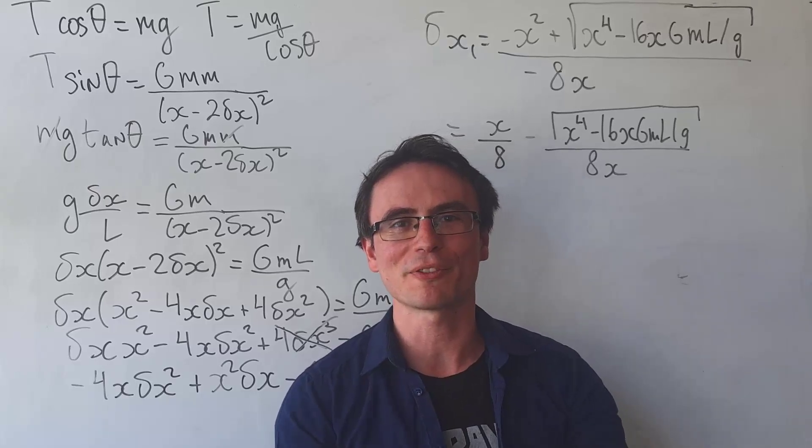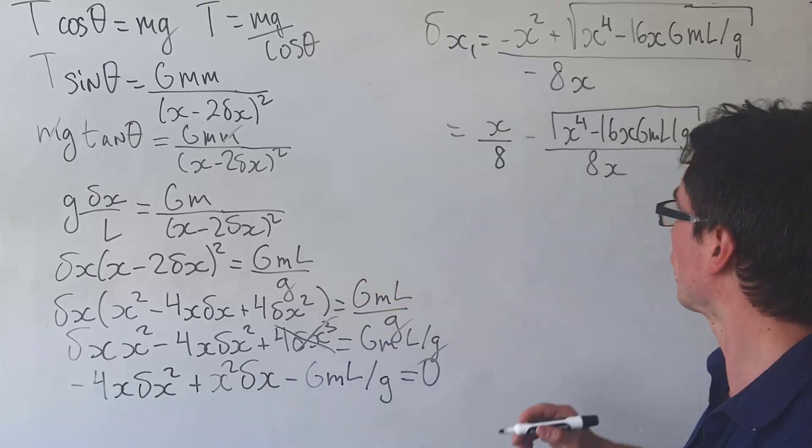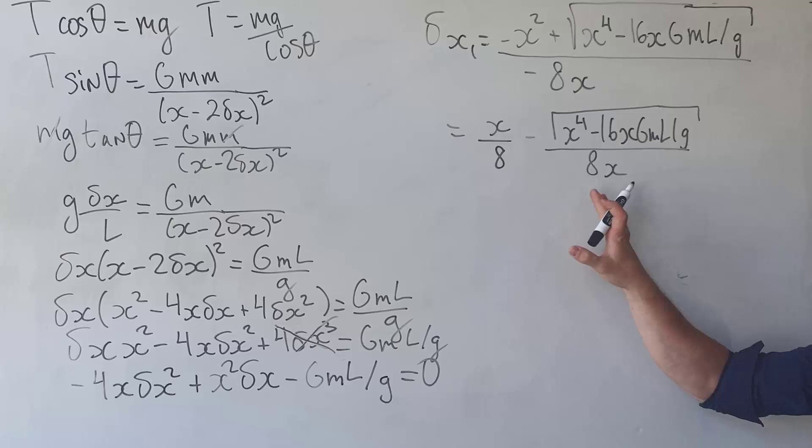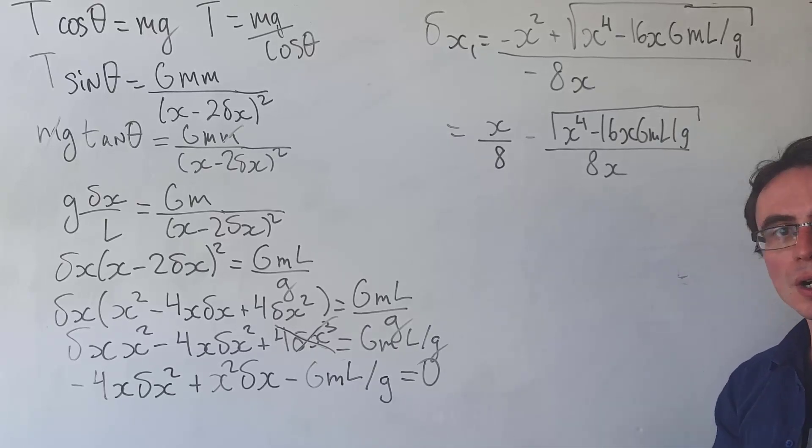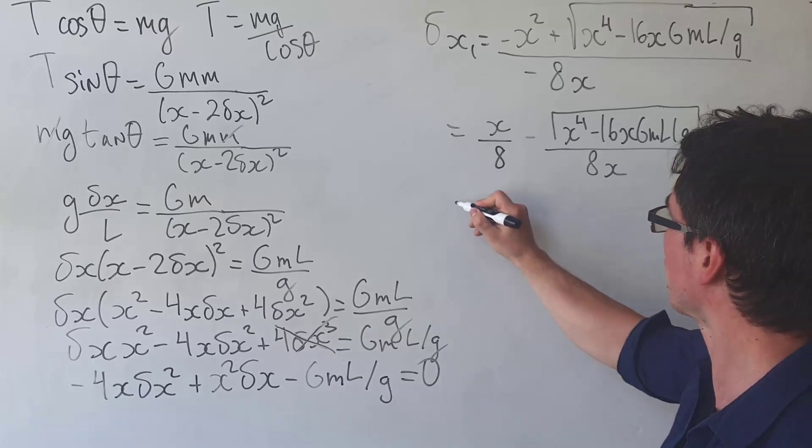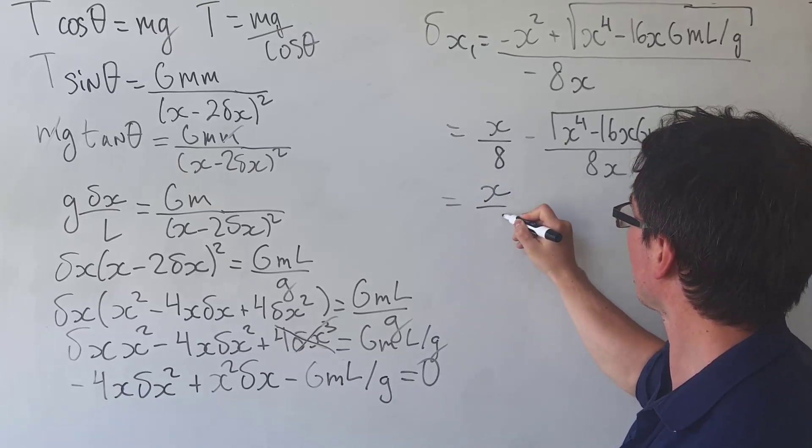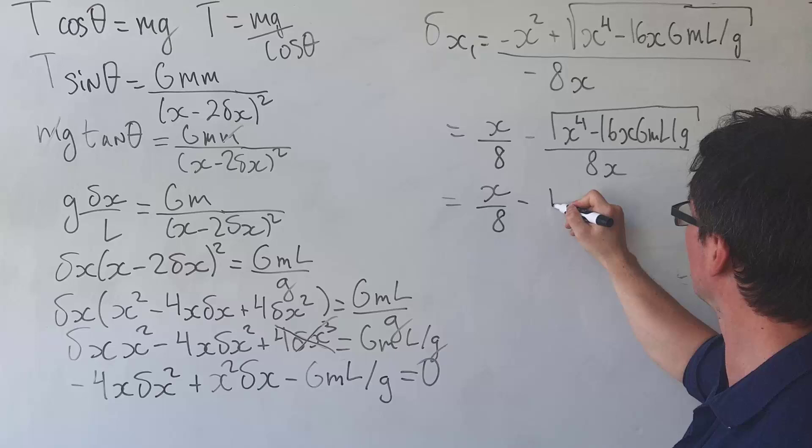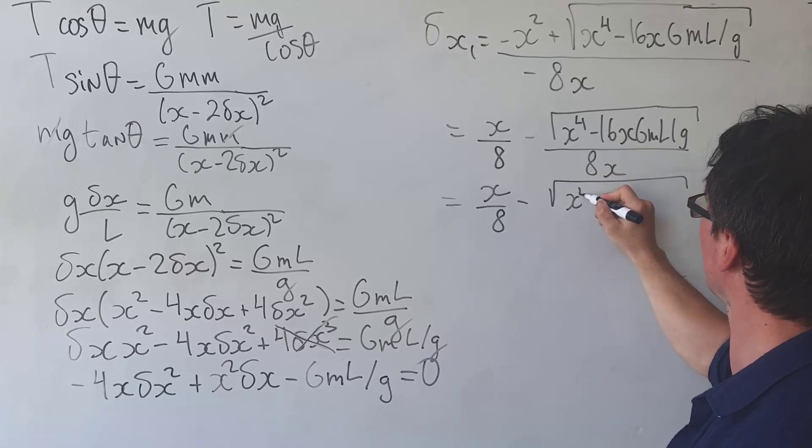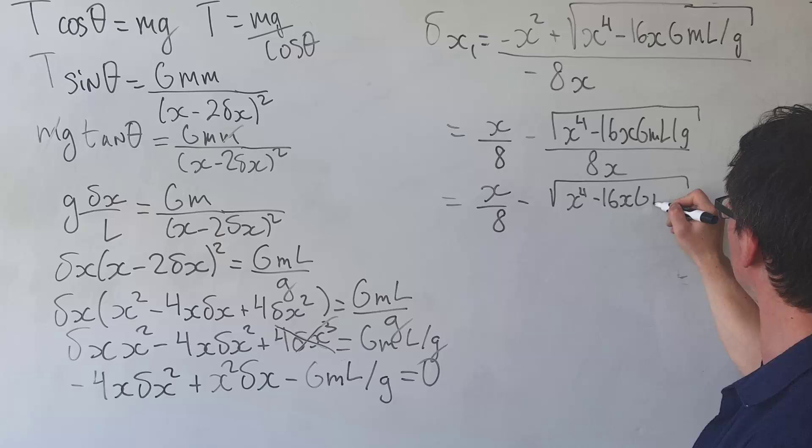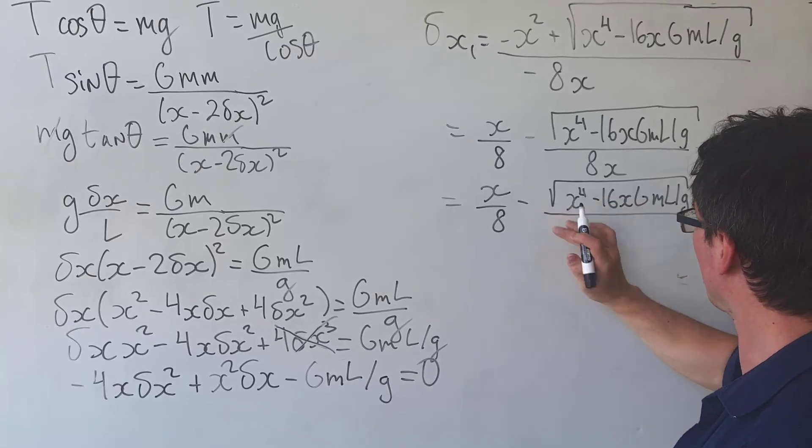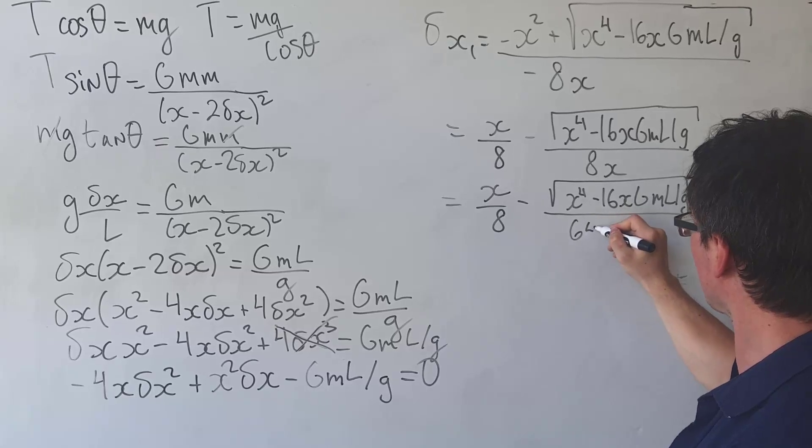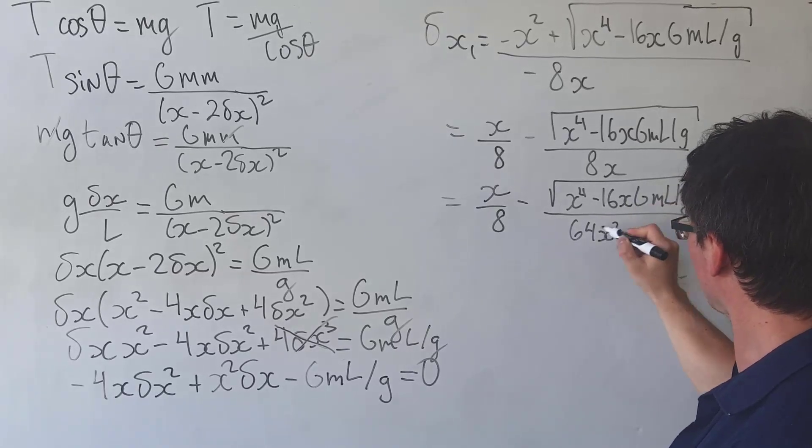Because the expression we're trying to prove is simplified even further, what I'm going to do is use a little trick by representing 8x as the square root of 64x squared. So this will be equal to x over 8 take away the square root of x to the power of 4 minus 16x gml over g divided by 64x squared.